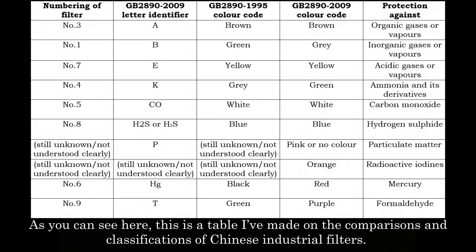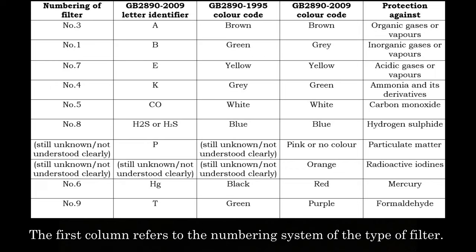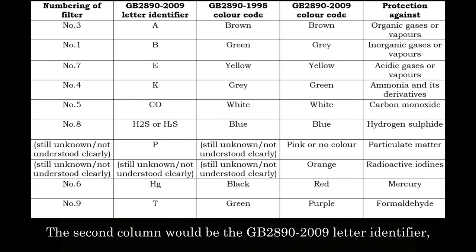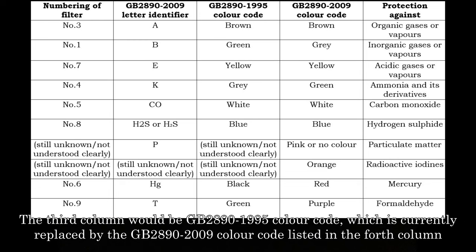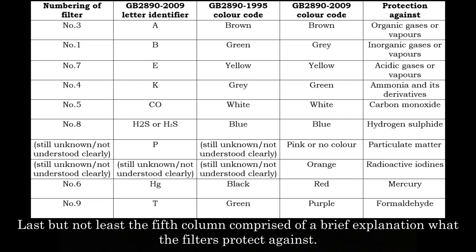As you can see here, this is a table I've made on the comparisons and classification of Chinese industrial filters. The first column refers to the numbering system of the type of filter. The second column is the GB2890-2009 letter identifier, which is quite similar to the internationally recognized ABEK system. The third column is the GB2890-1995 color code, which is currently replaced by the GB2890-2009 color code listed in the fourth column.